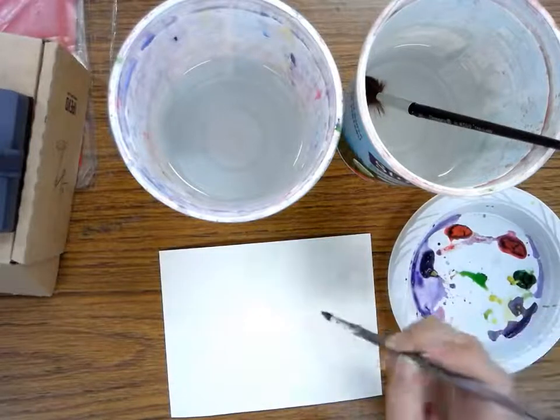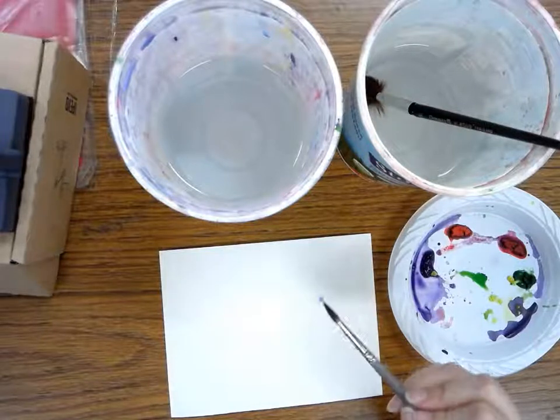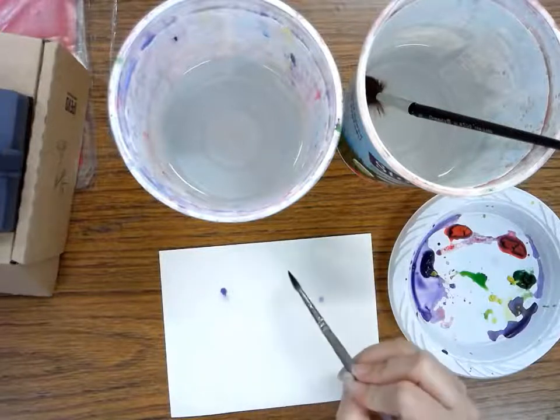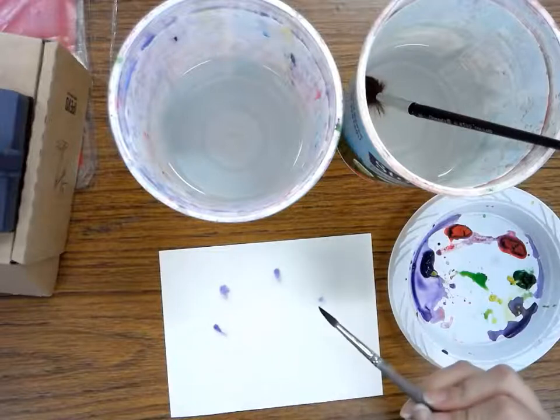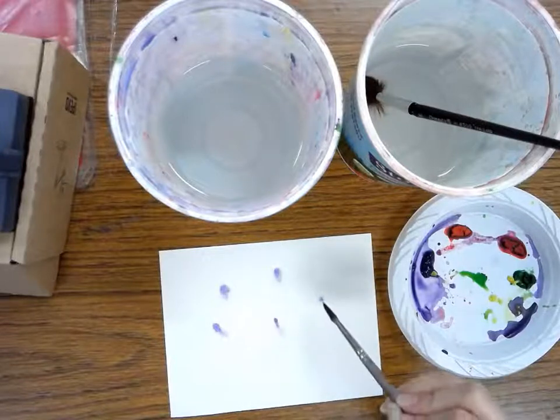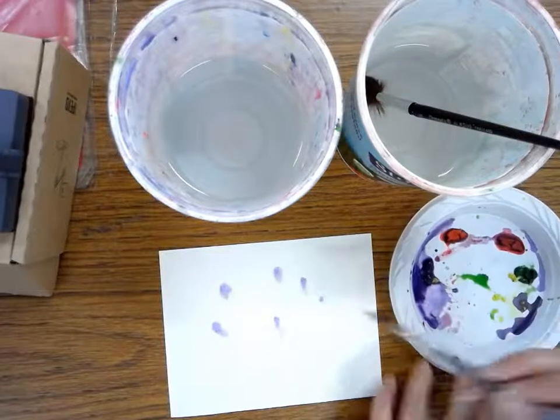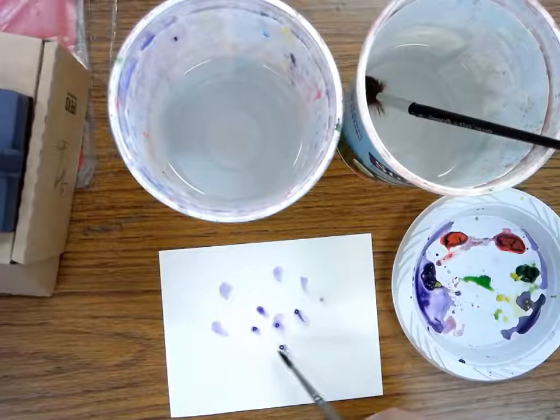And then I'm going to actually just touch my brush to the water. You can see how the paint kind of spreads around because the water is already on the paper. You can kind of dab it and see how it spreads. I want even more paint because it's not spreading quite as much as I want, so I'm going to add some more to it.